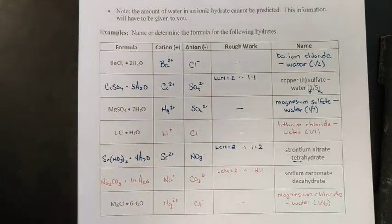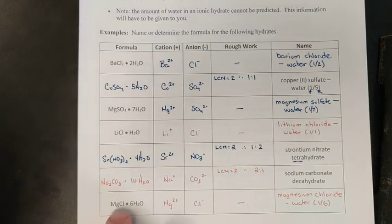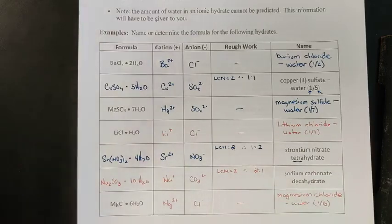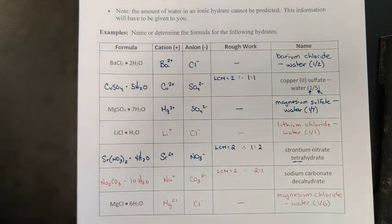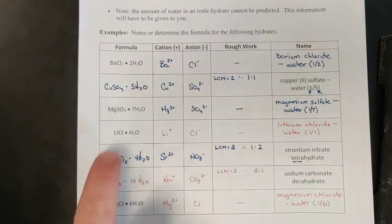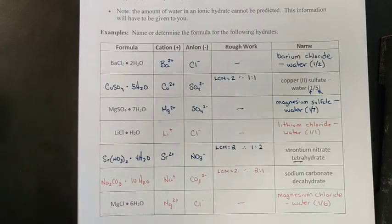The remaining solutions are: lithium chloride — water-1/1; for sodium carbonate decahydrate the formula is Na2CO3·10H2O; and for MgCl2·6H2O, no rough work is necessary — that's just magnesium chloride — water-1/6. You'll encounter hydrates in lab, and as we'll see in chapter two, the weight of these water molecules cannot be ignored when calculating molar mass — we must account for them.